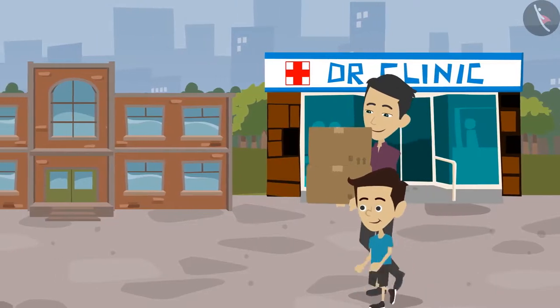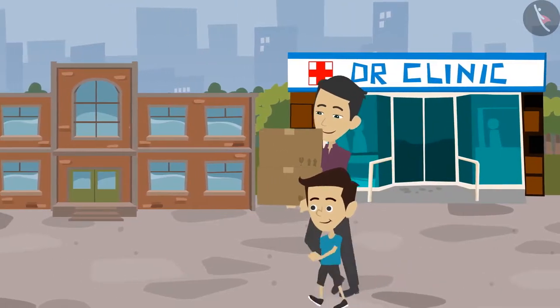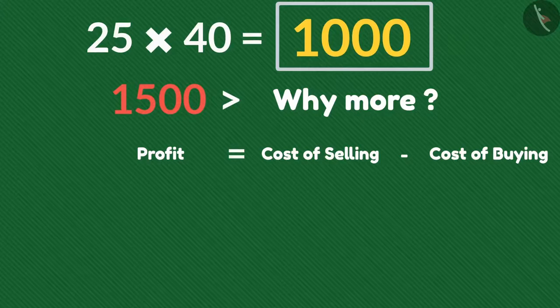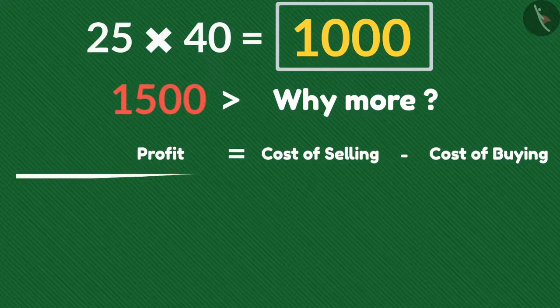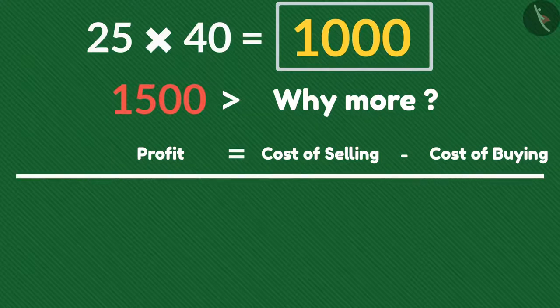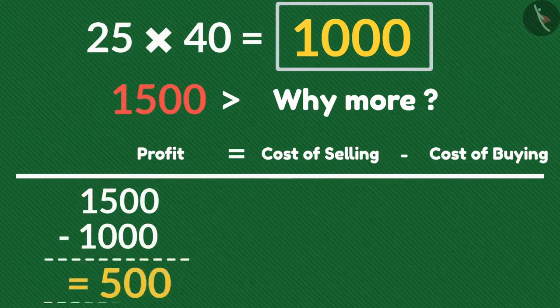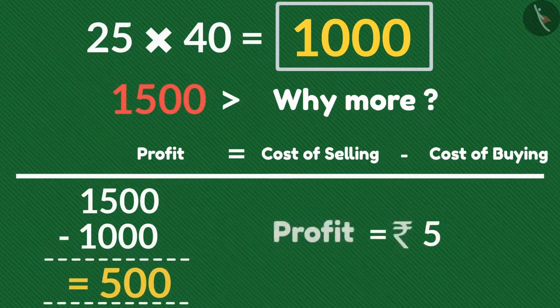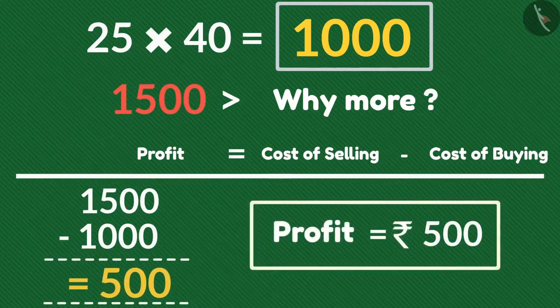Yes son, this is the profit. When we buy an item at a lesser price and sell it at a higher price, then we will get a profit. If we sell the books costing 1000 rupees for 1500 rupees, then our profit is rupees 500.